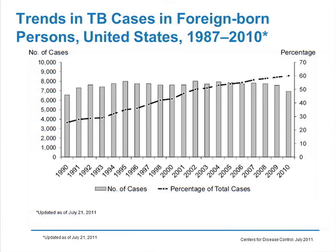This slide from the CDC website shows trends in TB among foreign-born individuals in the U.S. On the left is the number of cases; on the right is the proportion of cases in foreign-born individuals. Approximately 60% of TB cases in this country are in foreign-born individuals. In Oregon, for example, 75% of cases are in foreign-born individuals. Clearly, this is the single biggest risk factor for TB in this country — it has to do with where you were born.